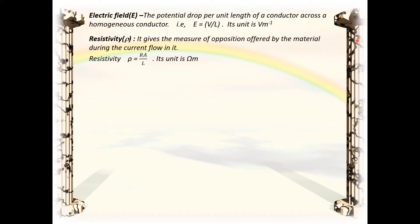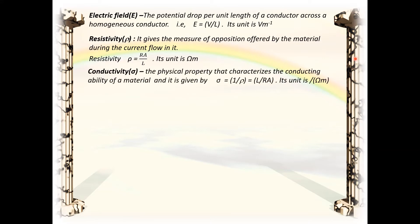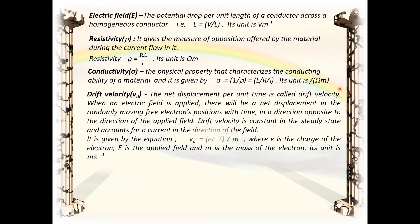Resistivity ρ gives the measure of opposition offered by the material during current flow; it is given by ρ = RA/L, where R is the resistance, A is the area of cross section, and L is the length of the conductor; its unit is ohm meter. Conductivity σ — the physical property that characterizes the conducting ability of a material; σ = 1/ρ = L/(RA); its unit is per ohm meter. Drift velocity v_d — the net displacement per unit time.